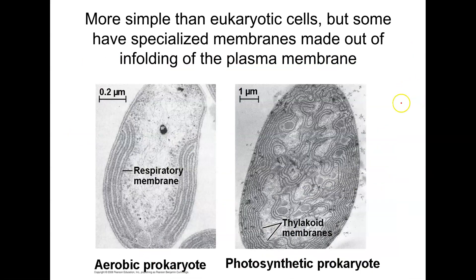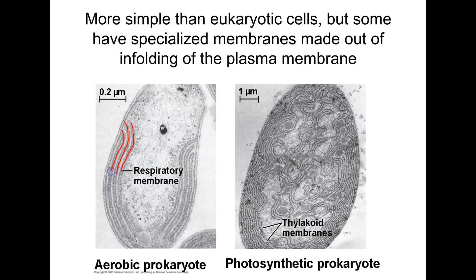Prokaryotic cells don't contain membrane-bound compartments like chloroplasts, mitochondria, or lysosomes. But that doesn't mean bacteria can't do photosynthesis or cellular respiration. It just means the apparatus to carry out cellular respiration in bacteria is part of an enfolded membrane — they don't have a designated partitioned organelle. Instead, they have enfolded portions of the plasma membrane in which these functions take place.